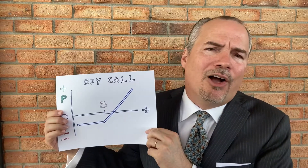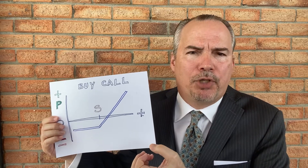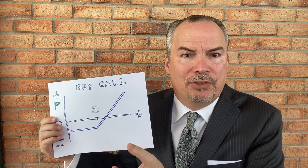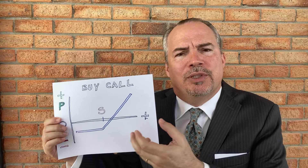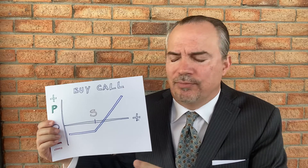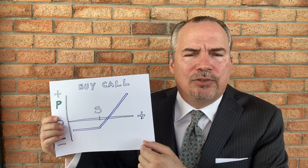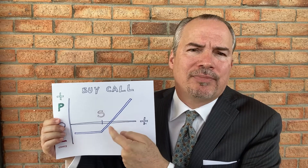A call option is an option to purchase a security — it's the same as an option to buy. You can do it on individual stocks, or you can also do it on ETFs or indexes, which have a lot of options traded. The call option has a strike price, and if the price increases then the option value goes up because you can purchase it at this fixed price anytime up to the expiration date.